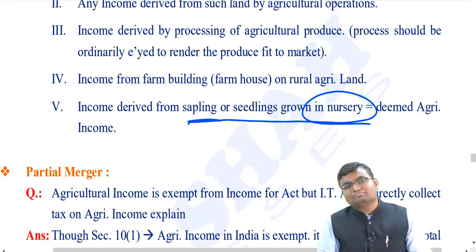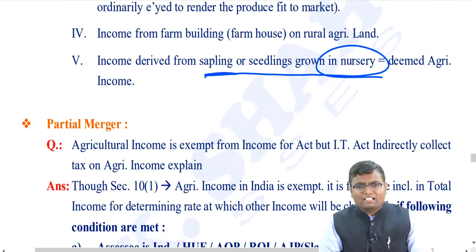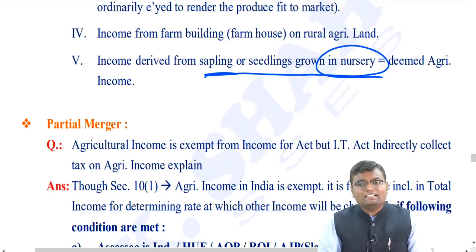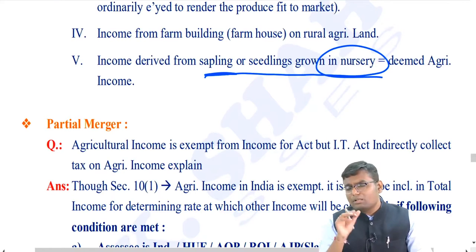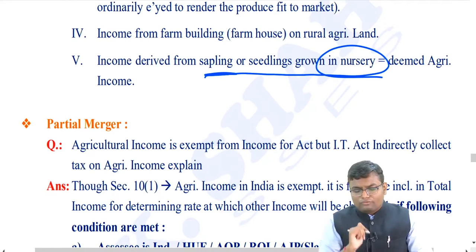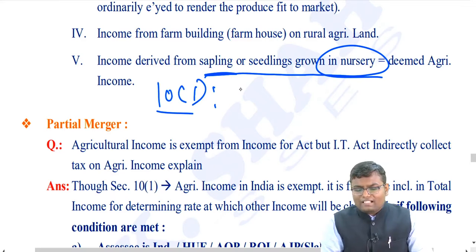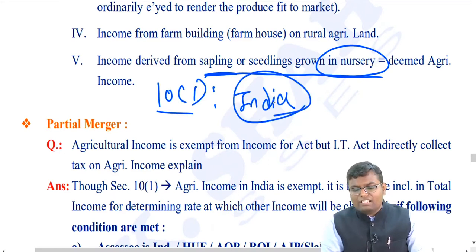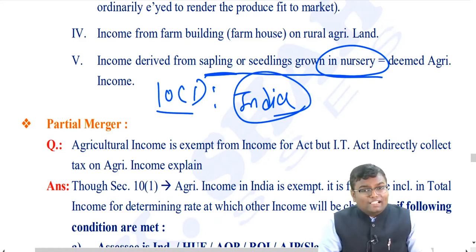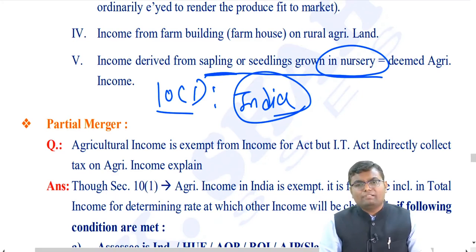Once you determine that something is agricultural income, keep in mind that section 10, clause 1 says: agricultural income arising from India is completely exempt. So while calculating income, you should not add agricultural income into the total income.